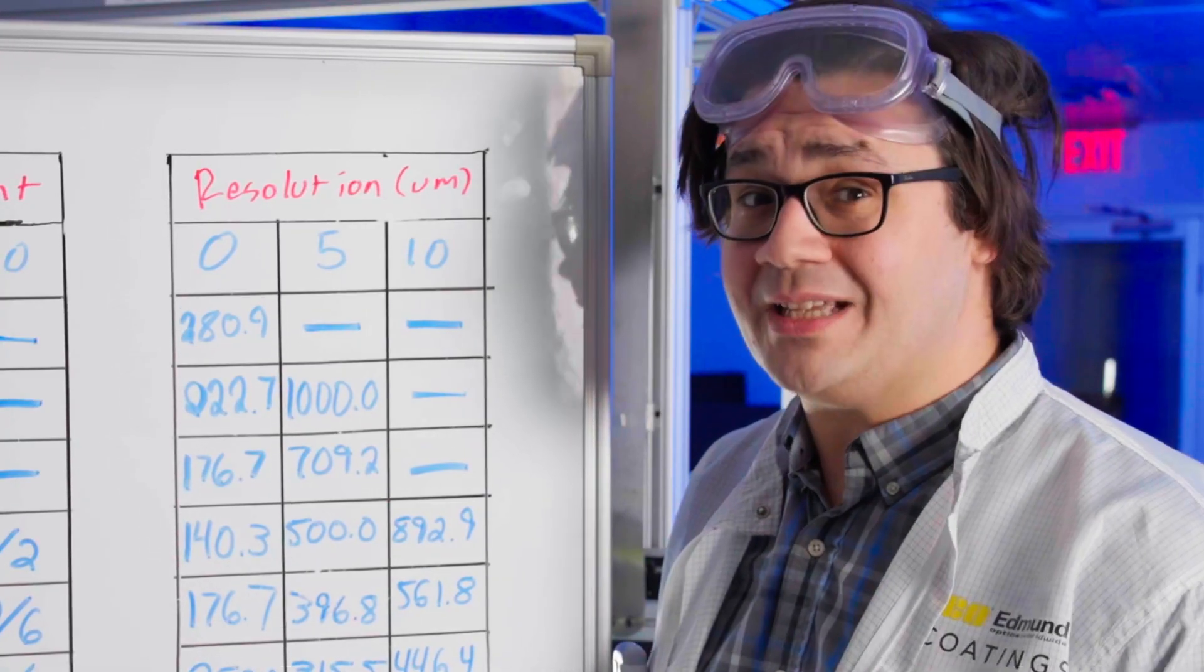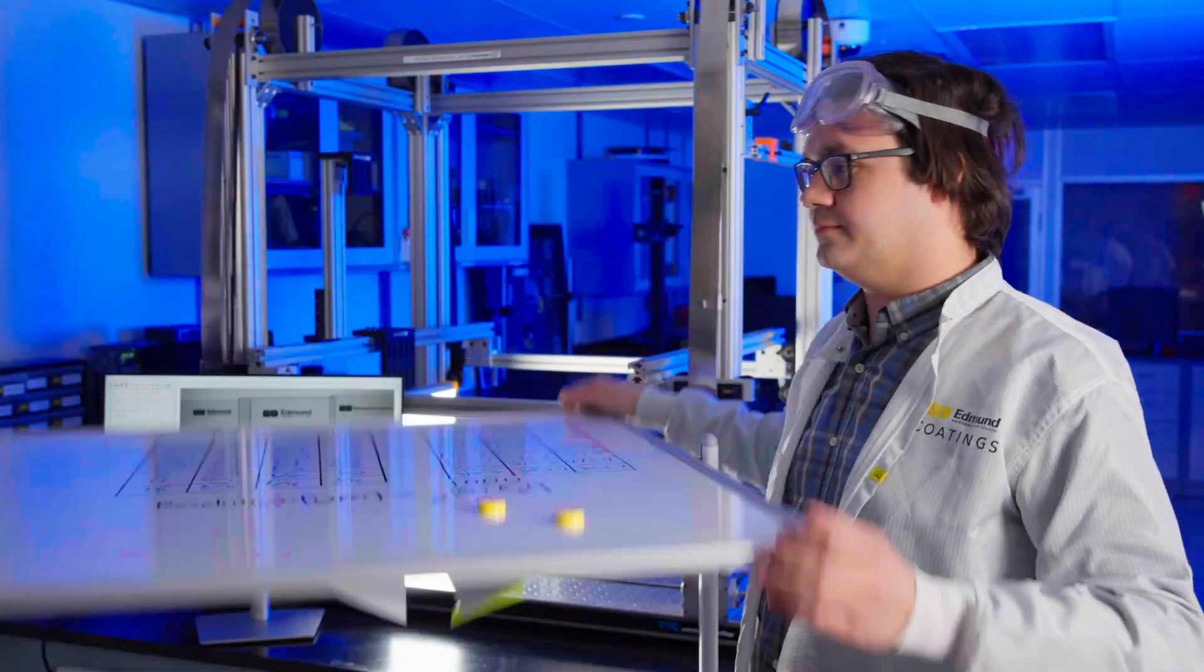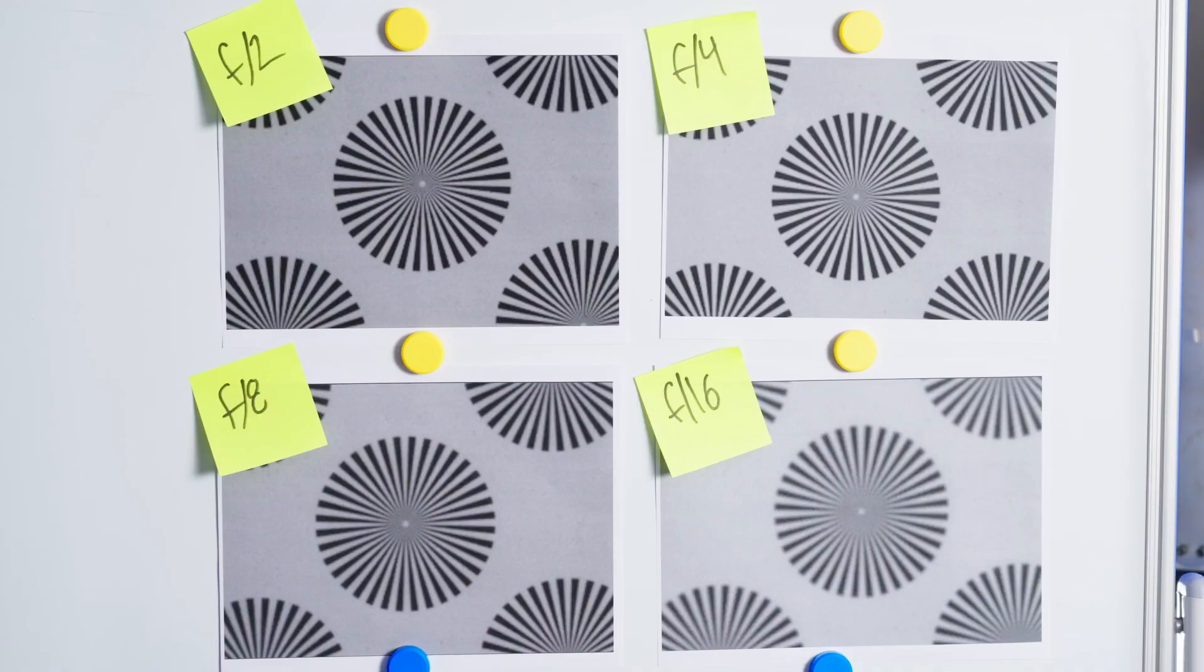But what does this change in resolution really look like? Here we have a series of star target images. Star targets are another type of resolution target that we use, that show a linearly increasing resolution as you move from the edge to the center of each star. For these, we zoomed in on our most central star to see the impact changing our F number has on resolution.